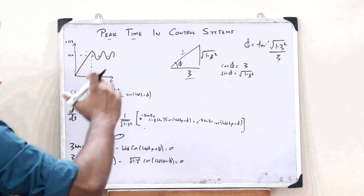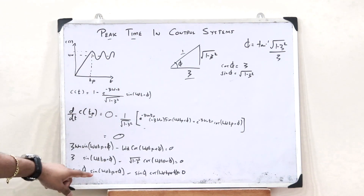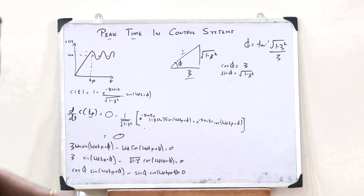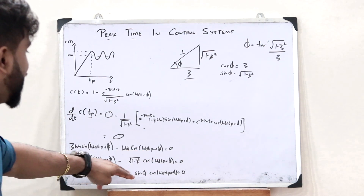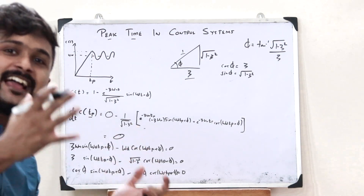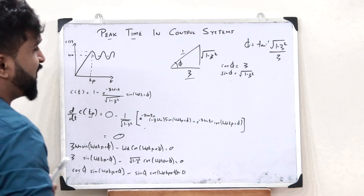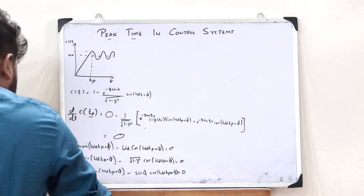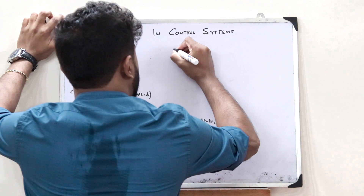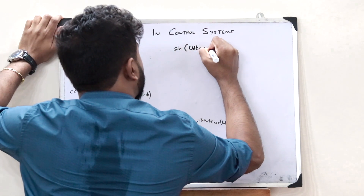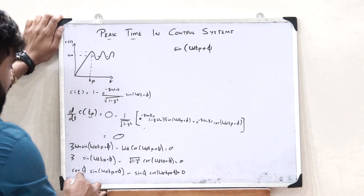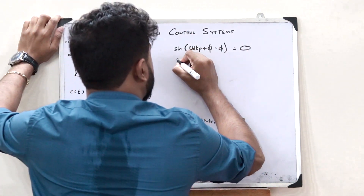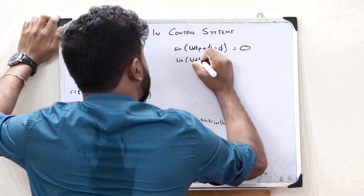On substituting, we get: cos phi sin(omega_d t_p + phi) minus sin phi cos(omega_d t_p + phi) = 0. This is of the form sin A cos B minus cos A sin B, which equals sin(A minus B). Applying this 11th standard trigonometric identity, we get sin(omega_d t_p + phi minus phi) = 0, and phi cancels, giving sin(omega_d t_p) = 0.